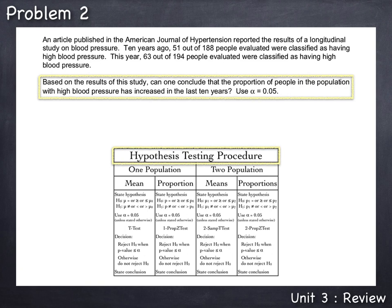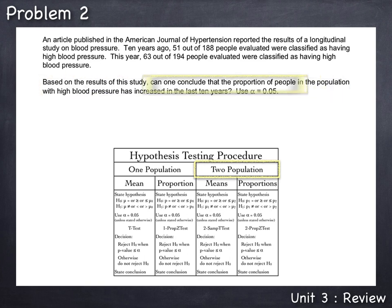Since this problem is comparing people from 10 years ago to people from this year, this would make it a two-population problem. And what we're comparing between these two populations of people is the proportion that have high blood pressure. So we'll be conducting a hypothesis test procedure for two population proportions.